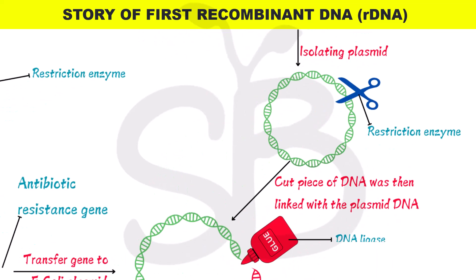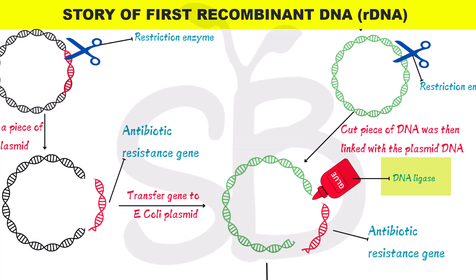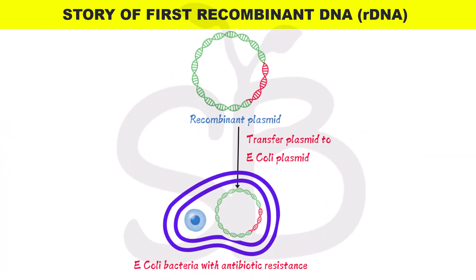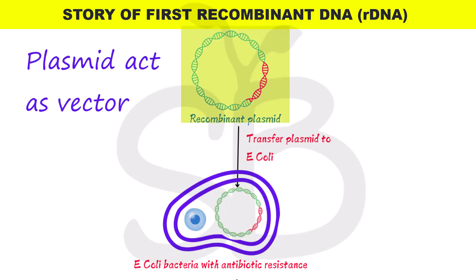This type of antibiotic-resistant gene is used with bacteria via a plasmid. That plasmid is then used with E. coli bacteria. The E. coli bacteria is transferred to the host cell.